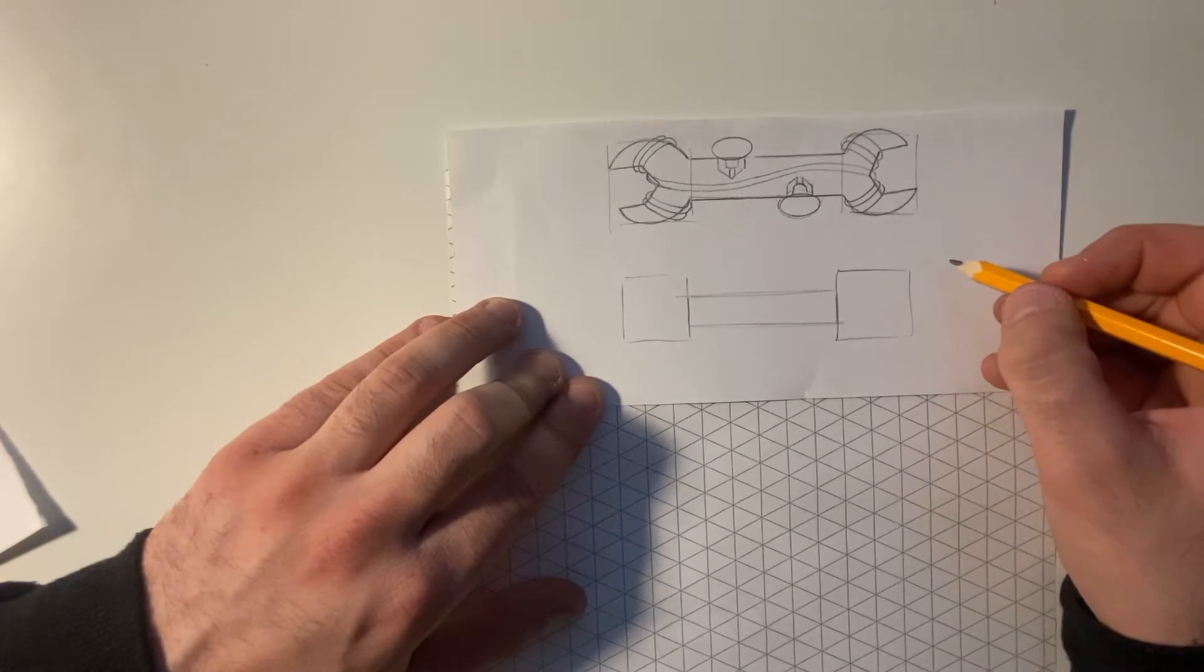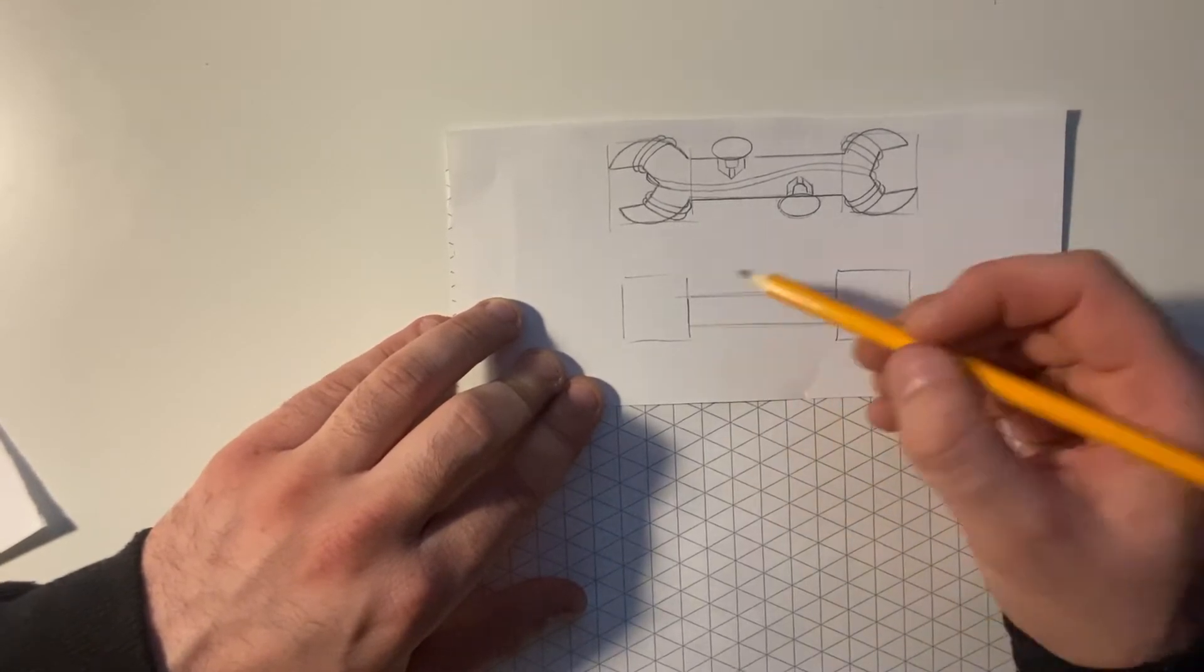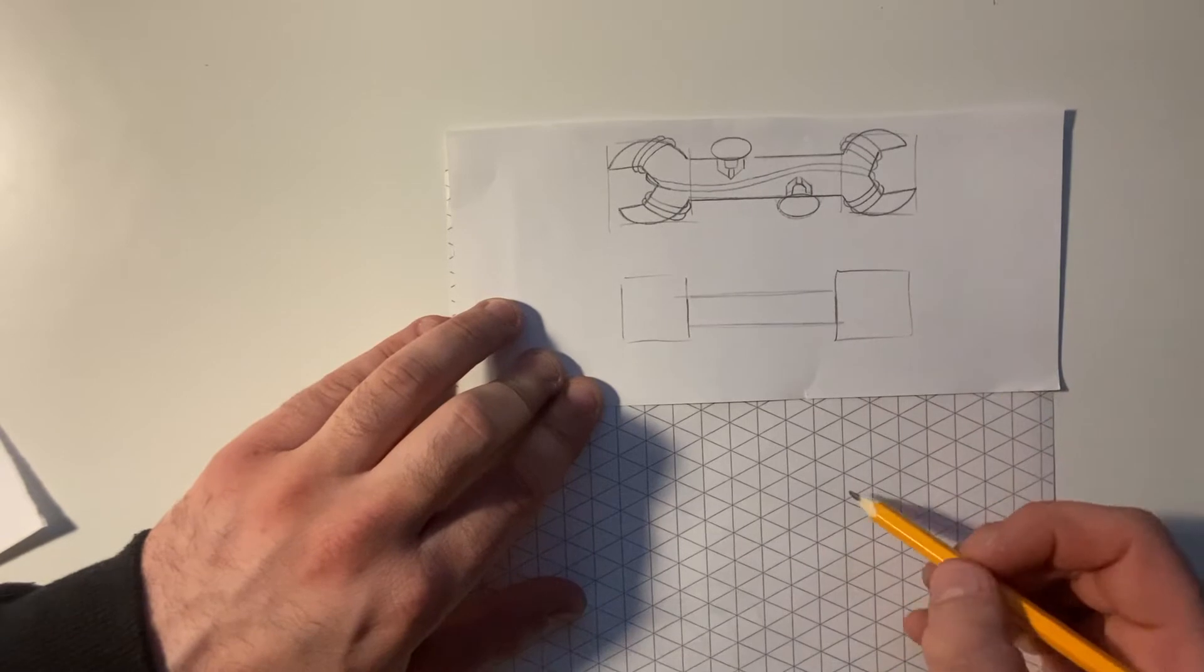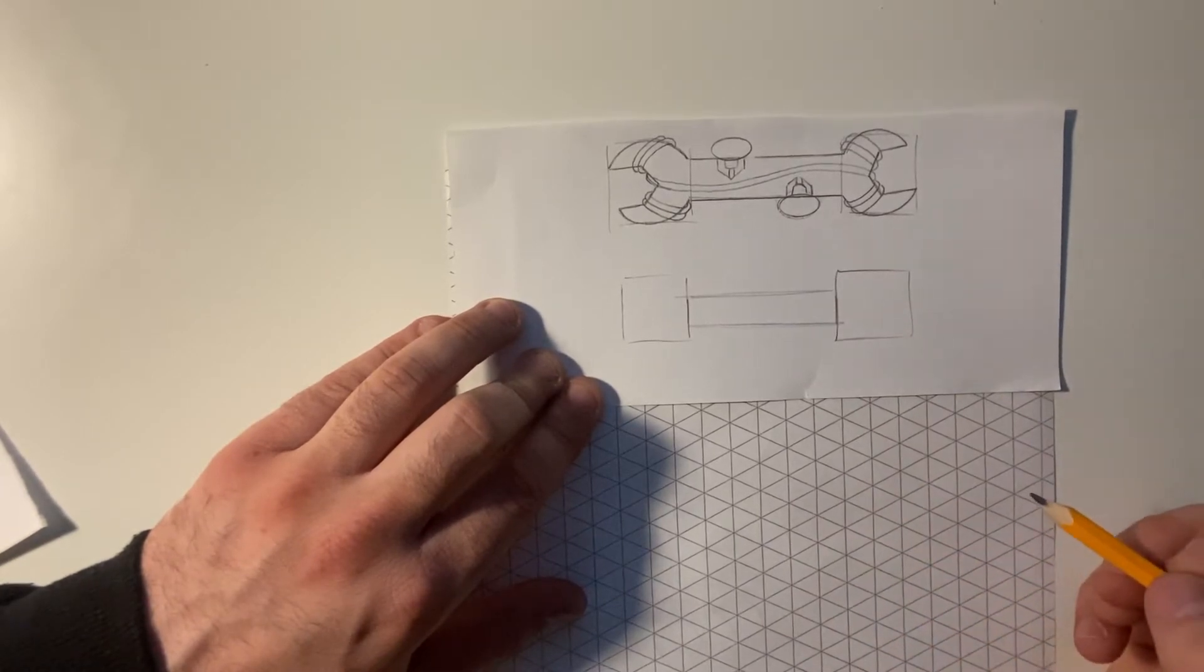So this is called a crating technique, where you're placing items into simple crates, which are more easy to convert onto this isometric paper.